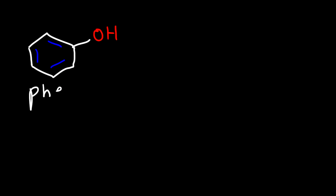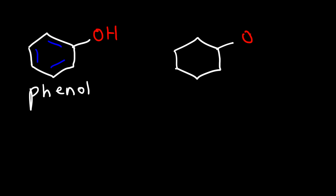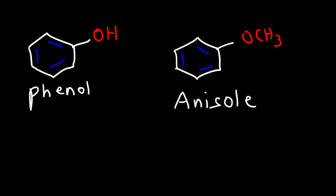What if we have a benzene ring with an OH group? The name is called phenol — that's the common name. For the next example, we have a benzene ring with an OCH3 group, so basically this is an ether. The parent name you want to be familiar with is anisole.